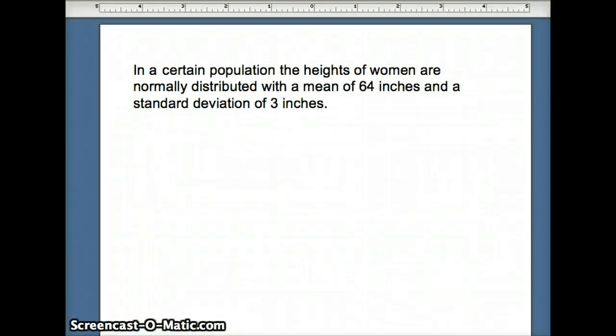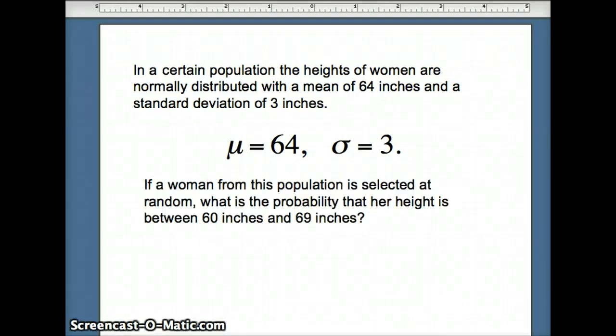In our next question, we have a population of women with a mean of 64 inches and a standard deviation of 3 inches. So that gives us the information we need to start with: mu is 64 and sigma is 3. And now we're going to ask a question. If a woman is selected at random, what is the probability that her height is between 60 inches and 69 inches?